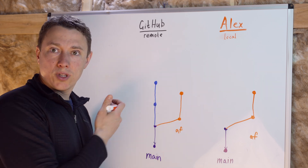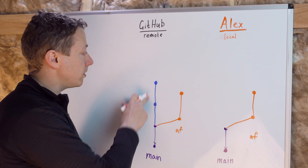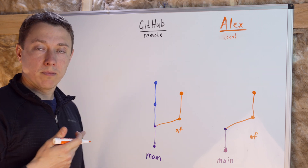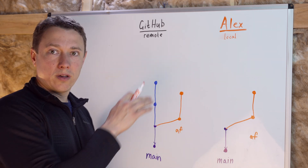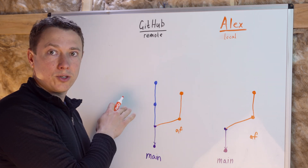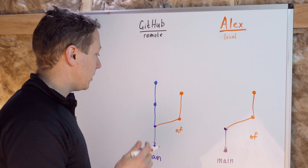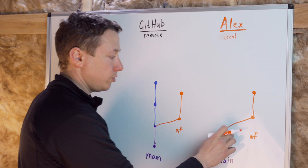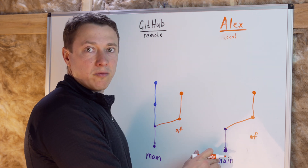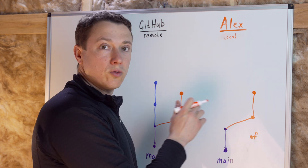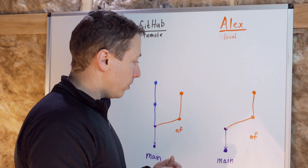Ideally, before you merge that pull request, you want to make sure that your changes work together with the latest changes from your team. You could test your latest changes together with the changes from main in two different ways: you could either merge the latest copy of main into your feature branch, or you could rebase your feature branch on top of main. I'll show you how to do both.